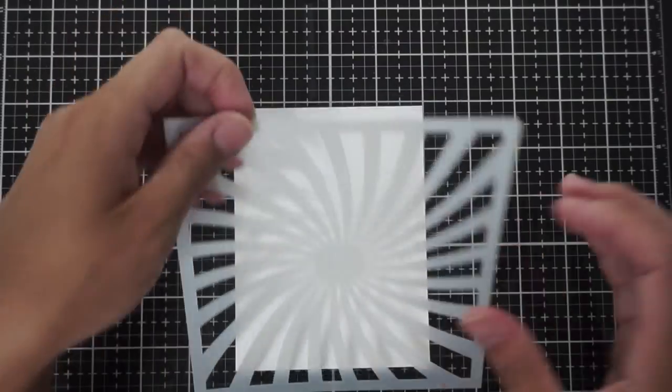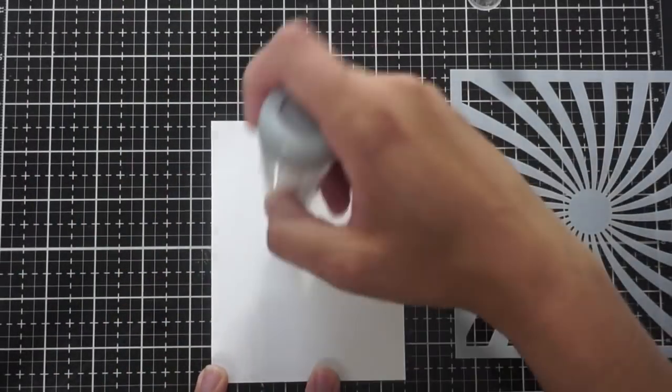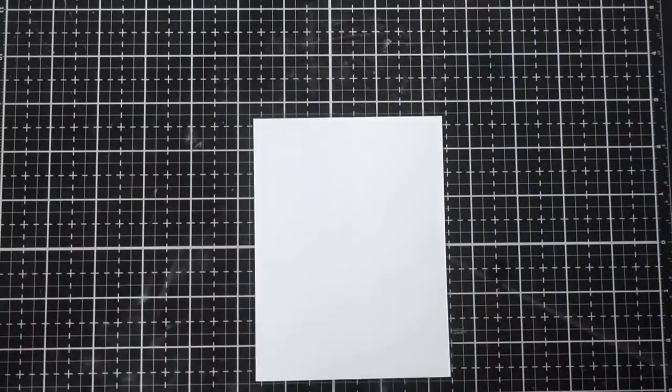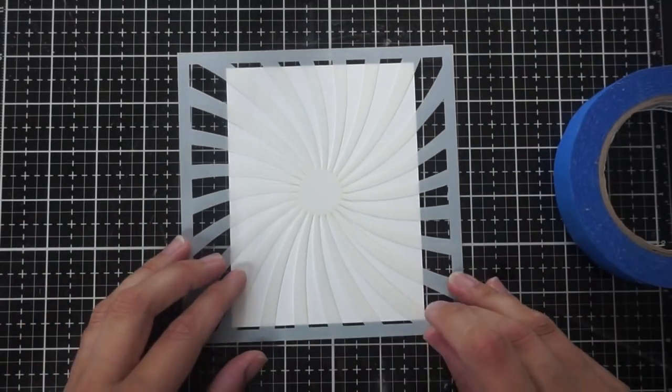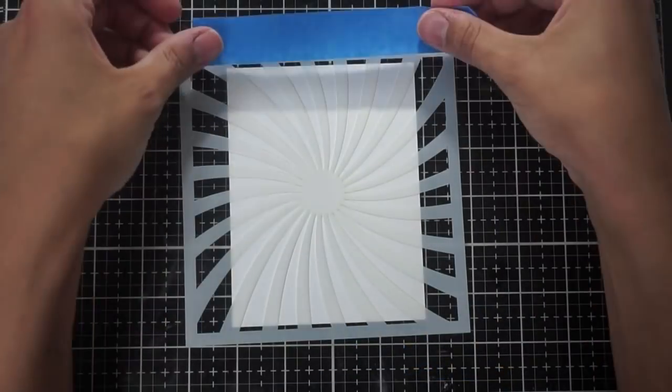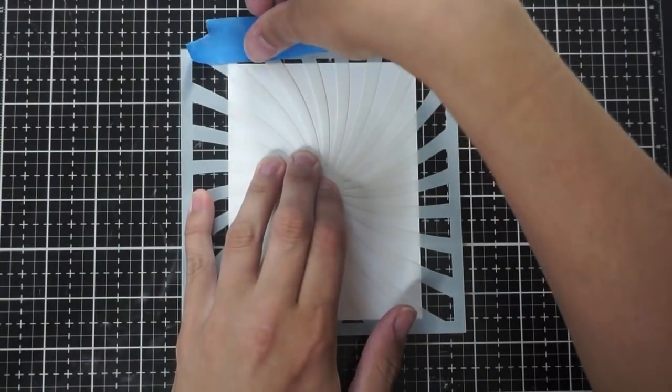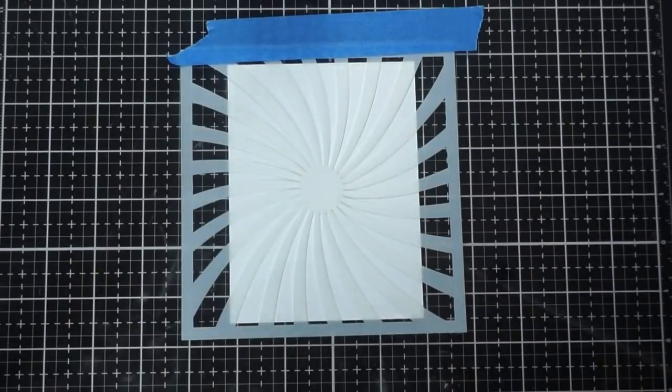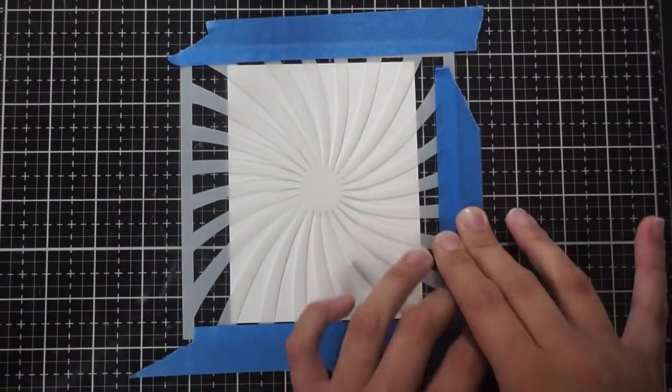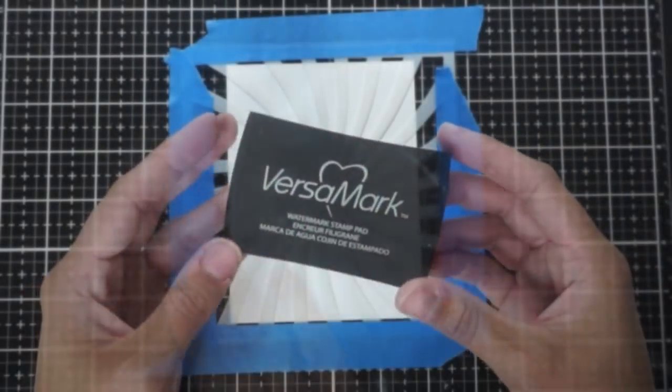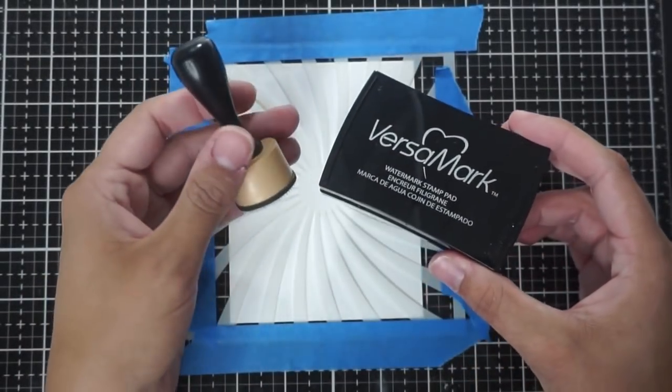I'm going to be embossing using this twisted Sunburst stencil so I'm prepping a piece of Kathryn Pooler premium white cardstock with my powder tool and I'm going to center this stencil, which is a new release from Kathryn, and I'm going to just tape all around it to keep it in one place. I want the stencil and the embossing to go all over the cardstock so I'm not going to put any of that tape on the cardstock.